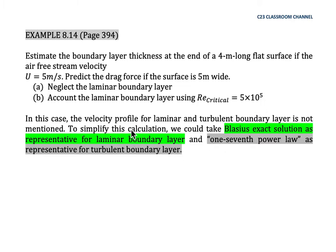In this case, the velocity profile for laminar and turbulent boundary layers is not given. To simplify, we take the Blasius exact solution as representative for the laminar boundary layer, and the 1/7 power law as representative for the turbulent boundary layer.